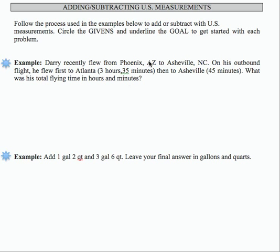Derry flew from Phoenix, Arizona to Asheville, North Carolina. On his outbound flight he flew first to Atlanta and that was a three hour and 35 minute flight, and then to Asheville which was 45 minutes. So what was his total flying time?